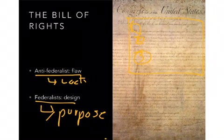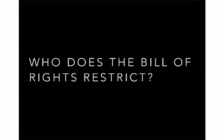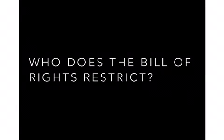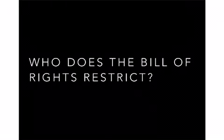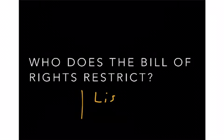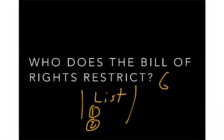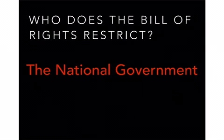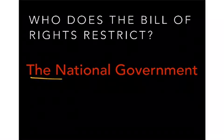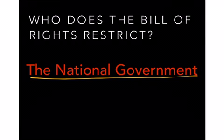The Constitution does not provide your freedom — you have that innately. So an early question is: who does the Bill of Rights restrict? The Bill of Rights says that government can't restrict your speech or your religion, can't stop you from bearing arms, and there's a long list of things. But to whom does the list apply? The actual answer is a little more complicated — it restricts the national government specifically. And this is a really big deal for the evolution of civil liberties in the United States.